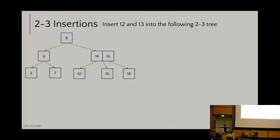Let's give it a try. Insert 12 and then 13 into the following two-three tree. Place them first as leaf nodes; once you get an overloaded leaf, split it, pop the middle value up, and generate three children hanging off that node. Go ahead and chat for about two minutes.